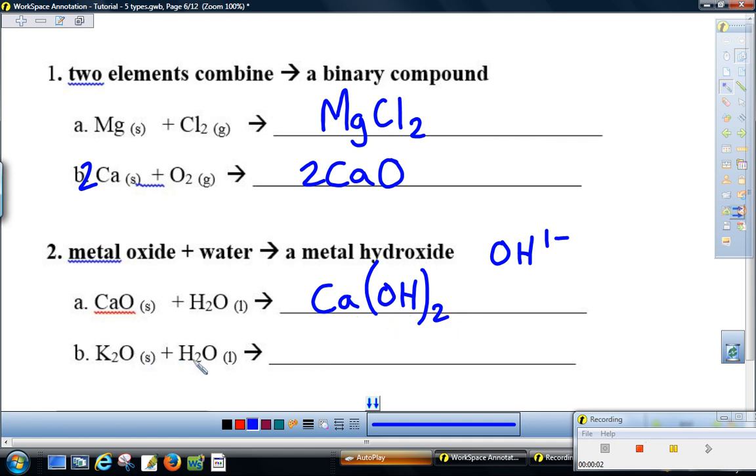Potassium oxide plus water, once again we get a metal hydroxide. Potassium is plus one, hydroxide is minus one, so a one to one ratio between these ions to make KOH. If we want to balance this, there are two K's here, so I need two of this, and then everything is balanced.